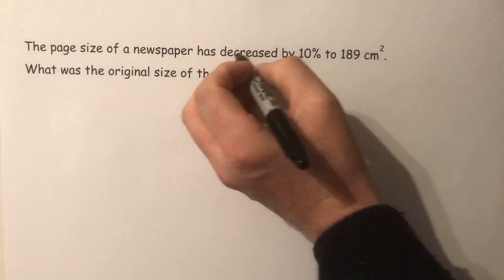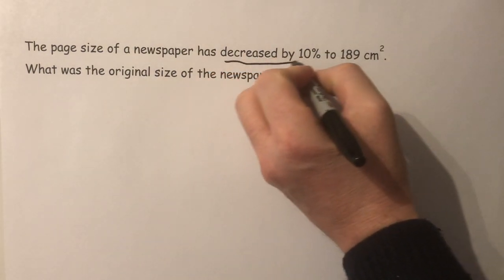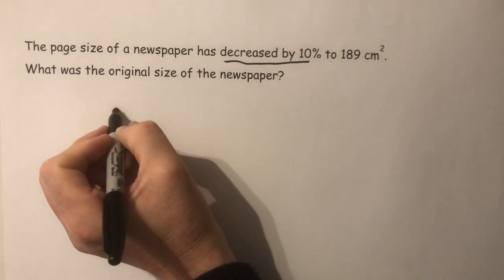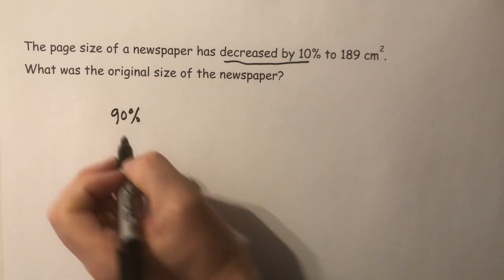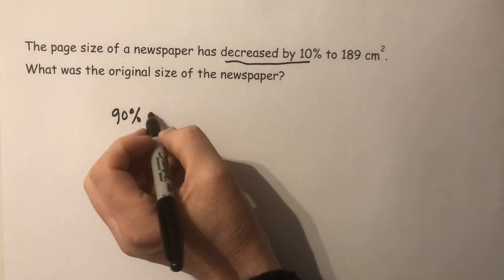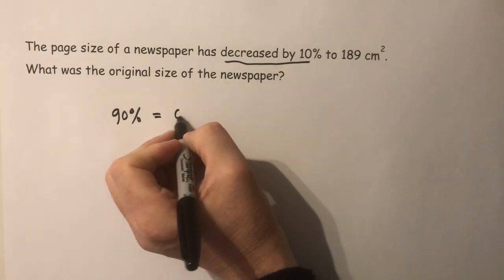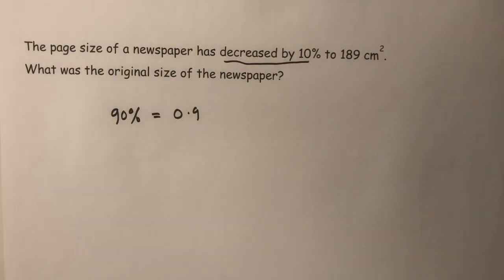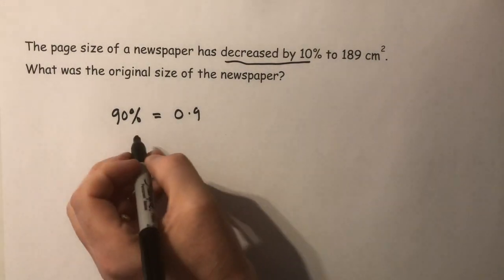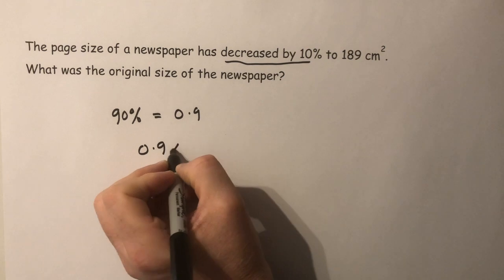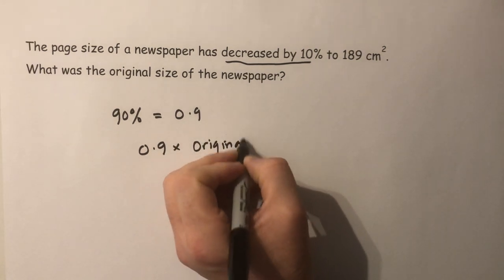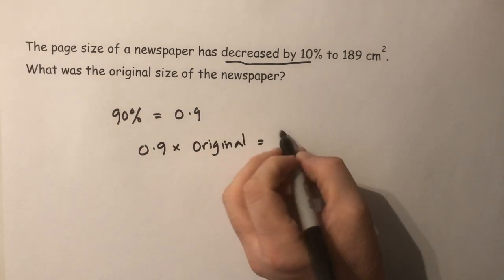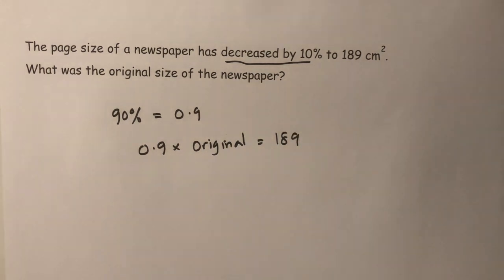If it's been decreased by 10%, its value is now 90% of what it was originally. Now 90% is 0.9 as a decimal. So 0.9 times the original value is equal to this new value of 189.